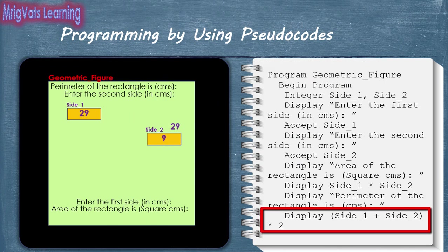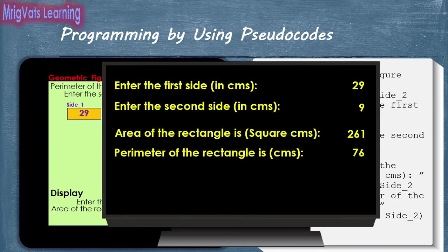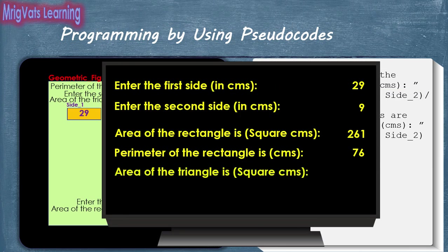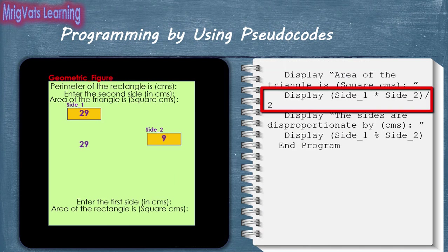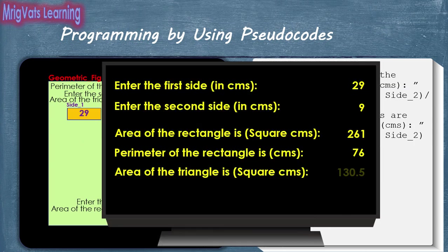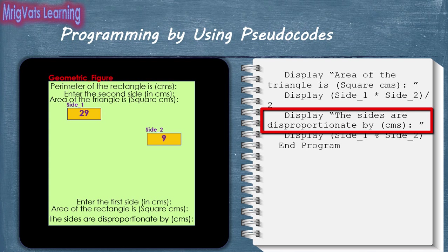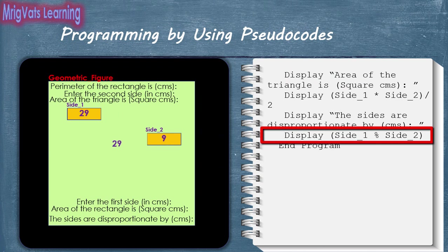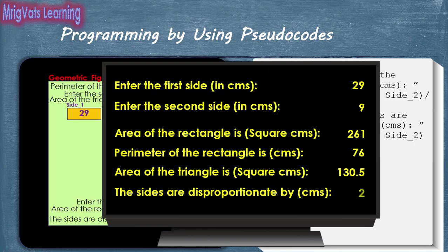With the next display statement, the program adds the values of the two sides and multiplies by 2 to compute the perimeter, and the display statement shows the result. Next, the program writes 'area of the triangle is square centimeters' text and then divides the product of the two sides by 2, displaying the result. Finally, the program writes 'the sides are disproportionate by centimeters' and then divides the value of Side1 by Side2, displaying the remainder on the virtual display board.